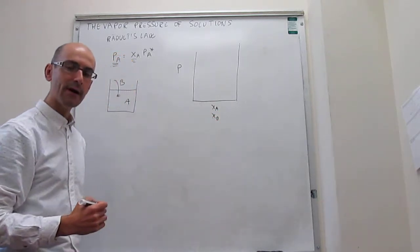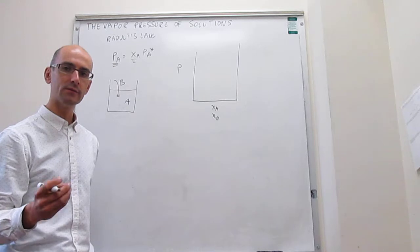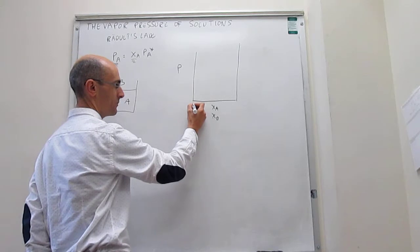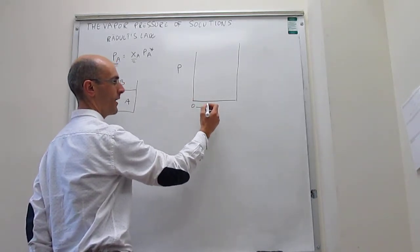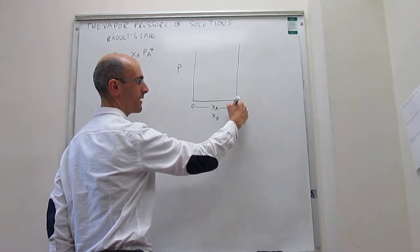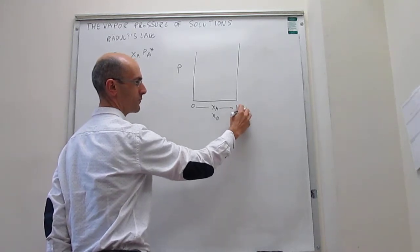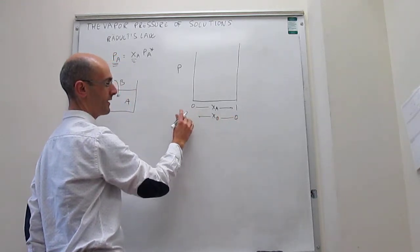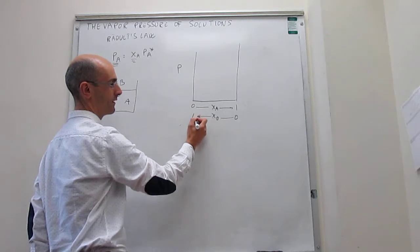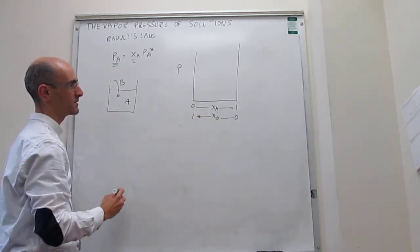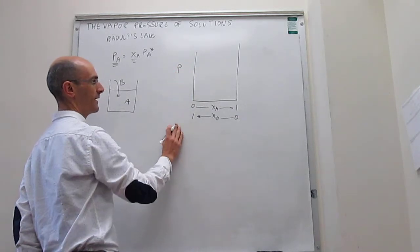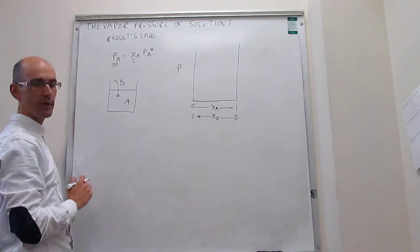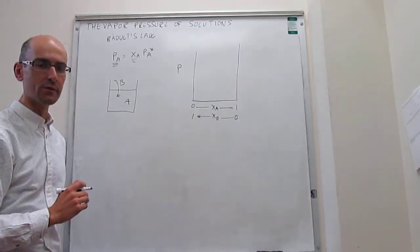Notice that this is a binary mixture, so the mole fractions of A and B always have to add up to 1. Let's assume that right here we have no A, and right here we have only A. That means right here if we have only A, then there would be no B, and here if we have no A, then we would have only B. We're going to plot the vapor pressures of A and B, so let's draw the line of vapor pressures of A.